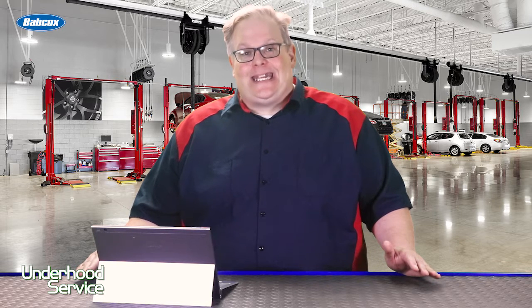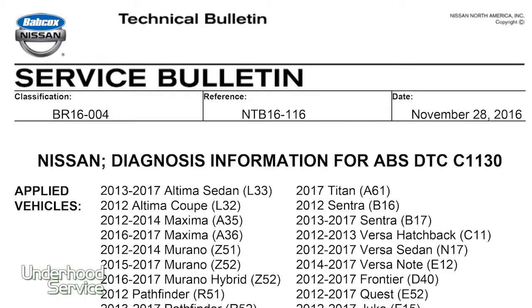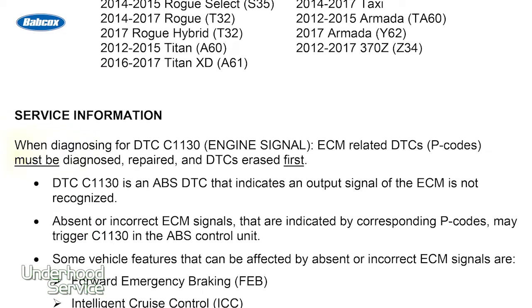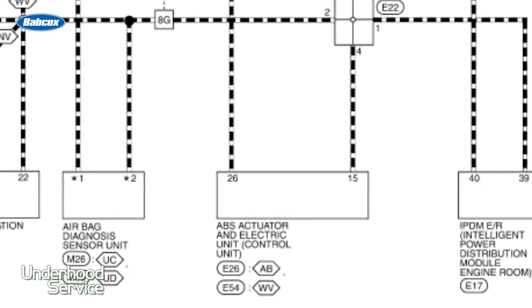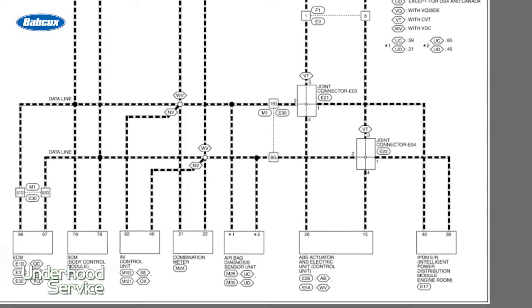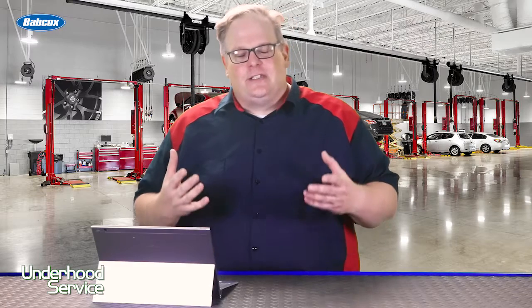Typically when C1130 comes up, it indicates the data is missing from the ECM that is required for the ABS module. When diagnosing for DTC C1130 for the engine signal, the ECM-related DTCs — in other words, the P codes — must first be diagnosed, repaired, and the codes erased. On all vehicles, not just Nissan, modules like to tattletale on each other. Modules on the CAN high-speed bus need to be talking to each other and the information needs to be complete. Code C1130 is no different.